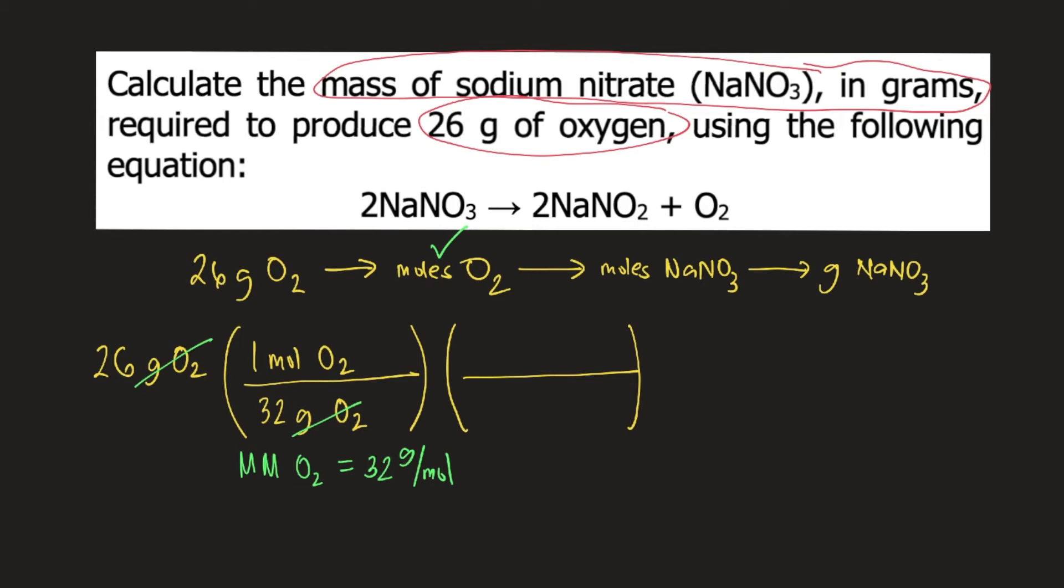According to the reaction, 1 mole of O2 is produced from 2 moles of NaNO3. So you plug that into your conversion: 1 mole of O2 at the bottom and on top, 2 moles of NaNO3. Moles of O2 will cancel.